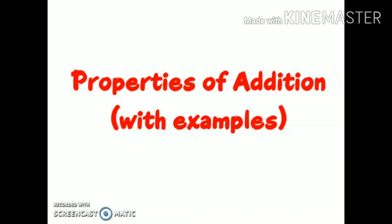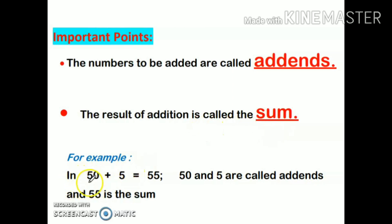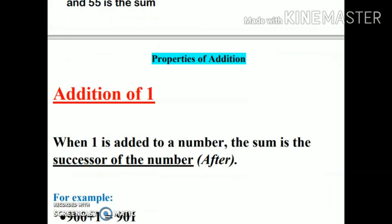Hi everyone, today we are going to discuss properties of addition. First of all, we will discuss some important points. The numbers to be added are called items, and the result of addition is called the sum. For example, in 50 plus 5, the answer 55 is my sum, and 50 and 5 are my items.